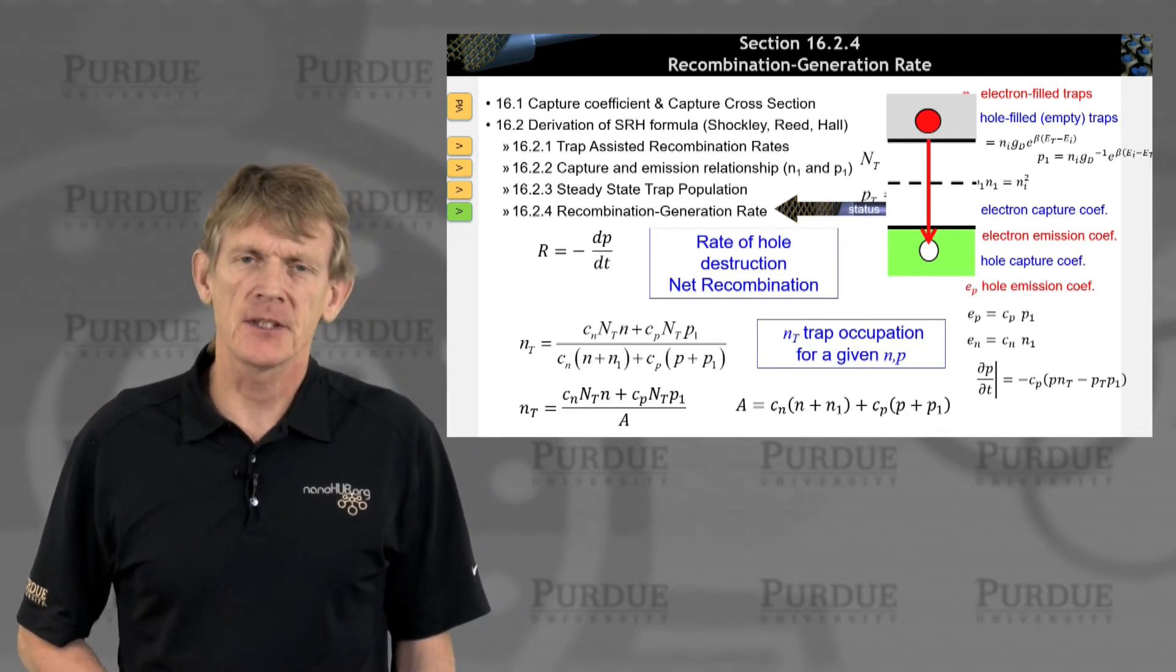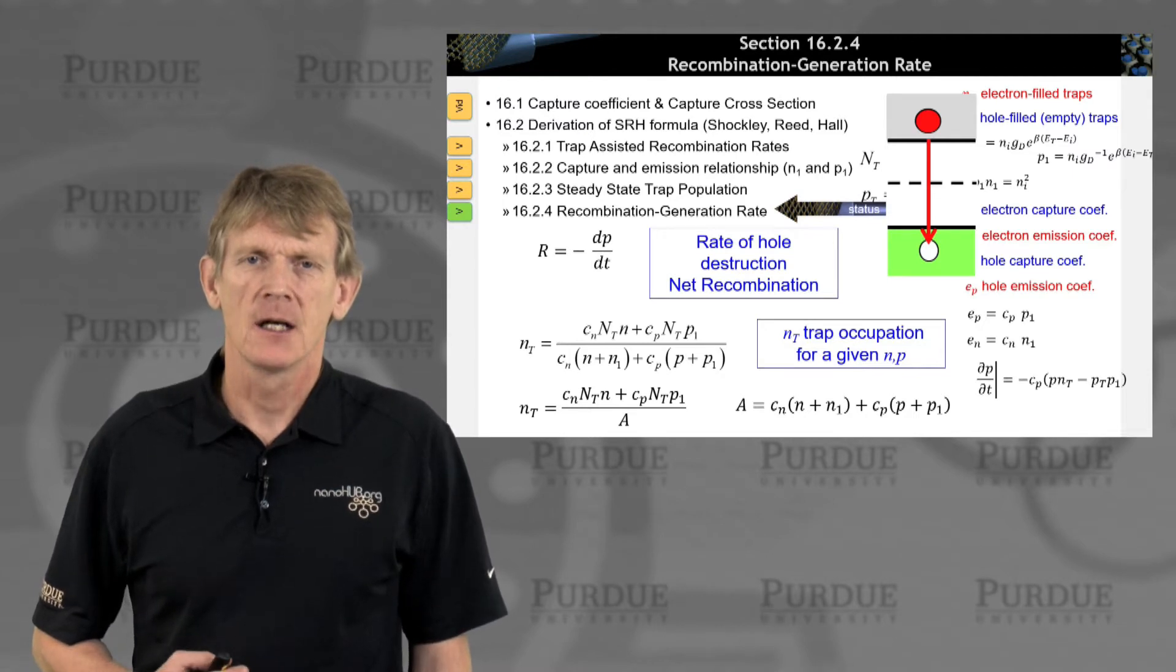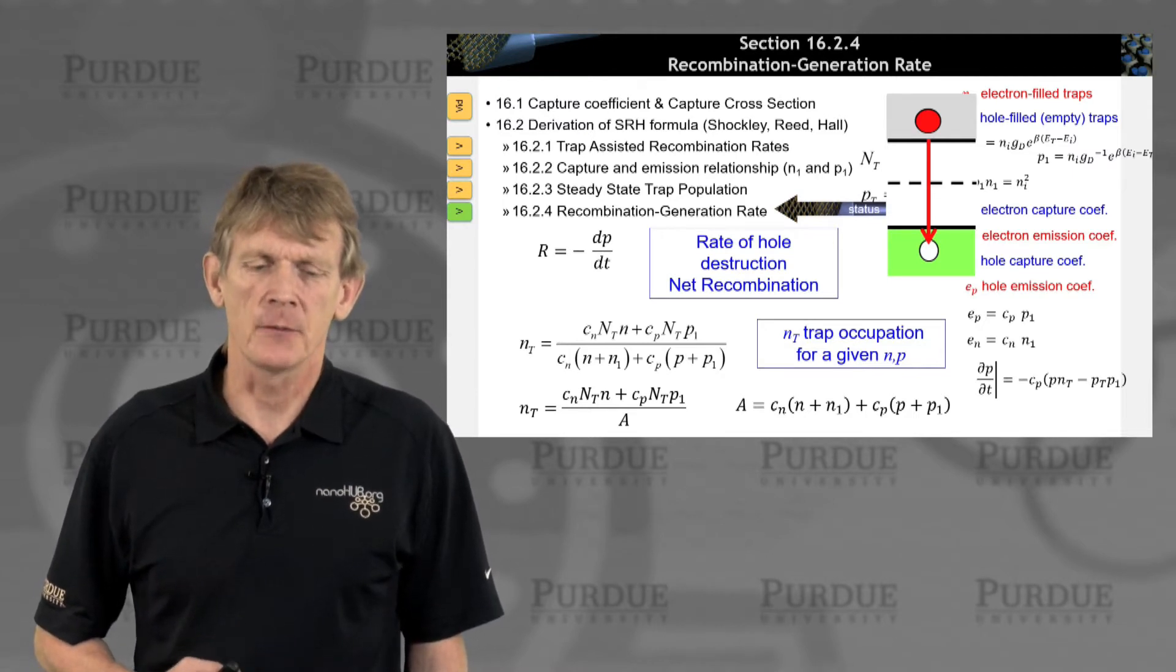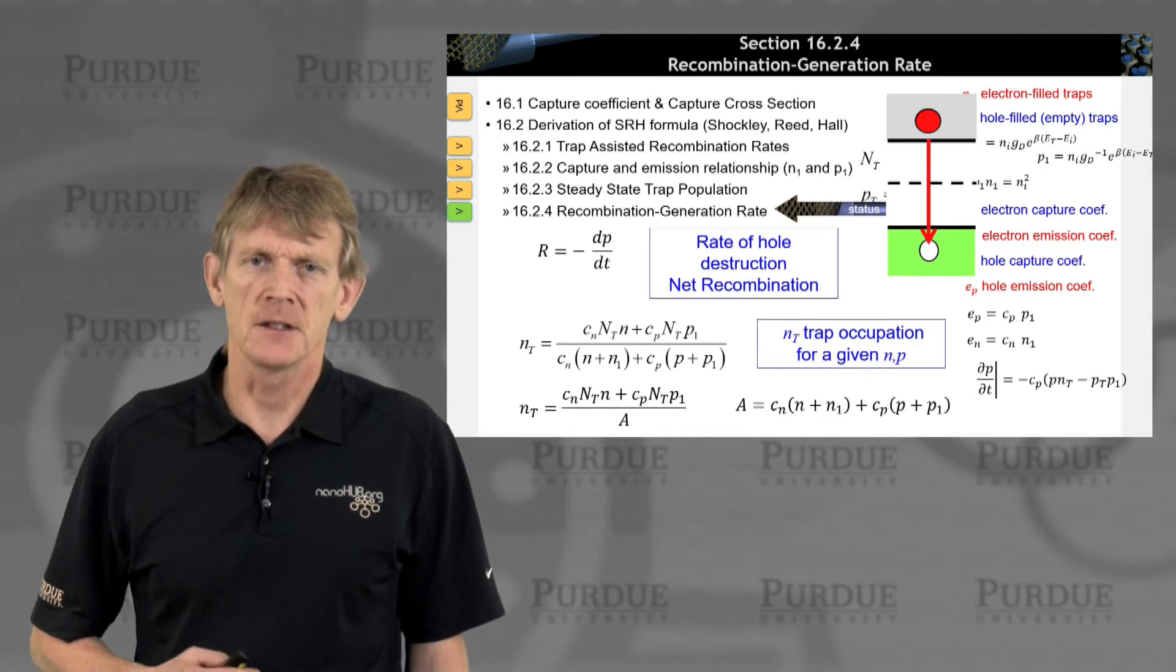In the previous three sections, we first calculated some rates for the trap-assisted recombination, some dN/dt and dP/dt.